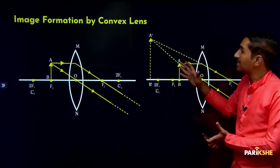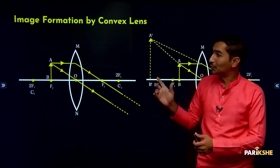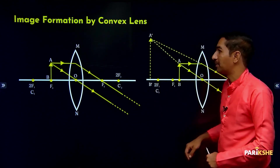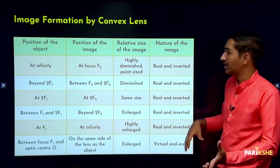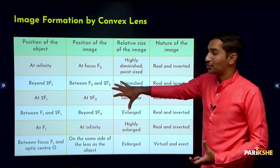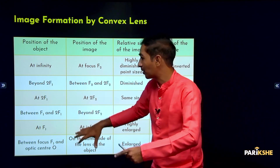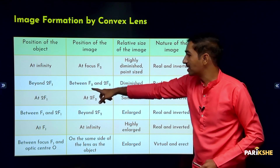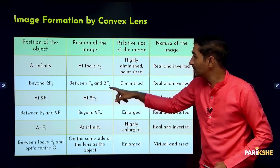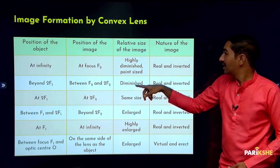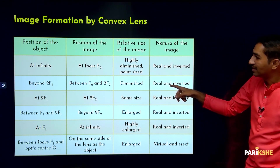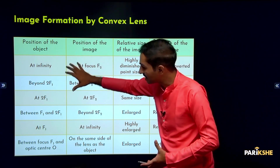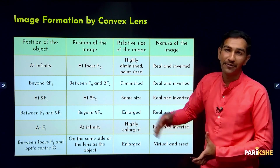So that is image formation by convex lens after learning the rules. Similarly, let's now look at concave lens. Summary: when object is beyond 2F1, position of image is between F2 and 2F2, relative size is diminished, and nature of image is real and inverted.